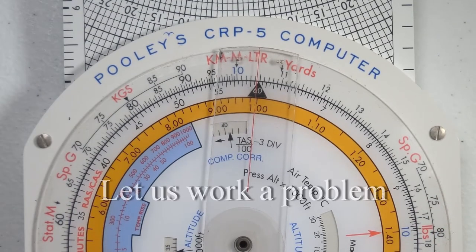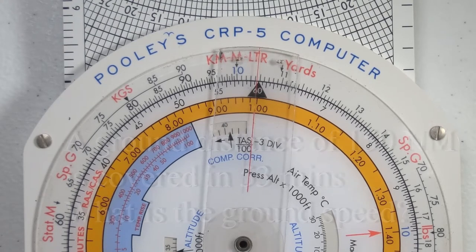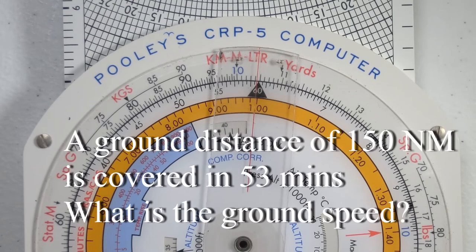Let's work a problem. In this problem we are going to assume that we will cover a ground distance of 150 nautical miles in 53 minutes. What is our ground speed?